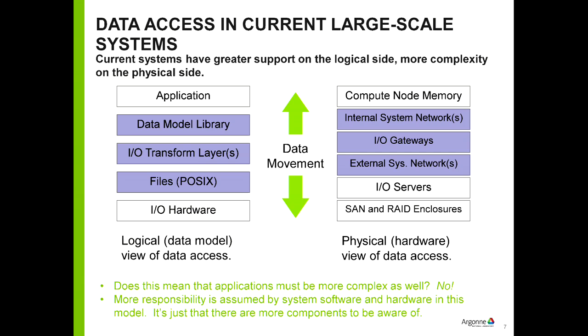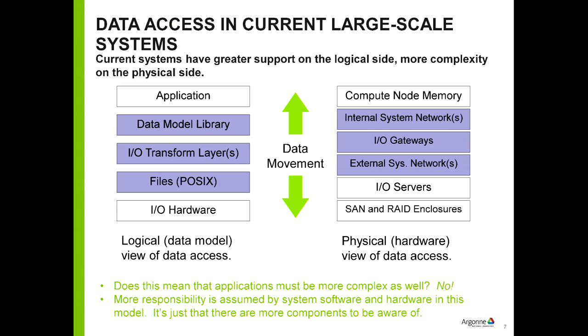What we really see now is that people aren't coming up with their own data formats as much; they're using libraries such as HDF, netCDF, or ADIOS that let you focus more on your scientific variables and less on organization. On the hardware side, things have gotten more complicated — there's a fast internal network for MPI communication, IO gateway nodes that transition you to the storage network, and servers that are elaborate RAID systems rather than simple computers with hard drives.